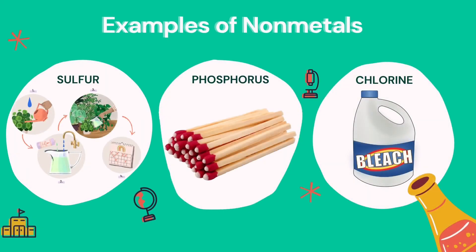Examples of non-metals include sulfur, which is used in manufacturing drugs and fertilizers. Phosphorus is a non-metal used in the manufacture of safety matches. It is also used in oil refining and production of gunpowder. Another example is chlorine, which is used in cleaning products, including household bleach, which is chlorine dissolved in water.